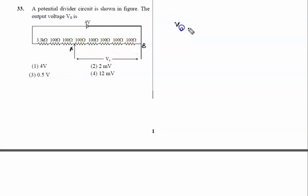V0 is given by I into R, where R is the resistance across A and B. That is 500 Ohm.